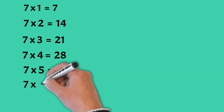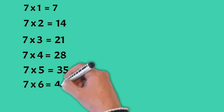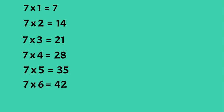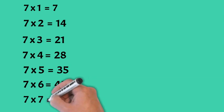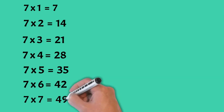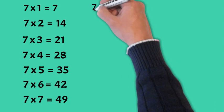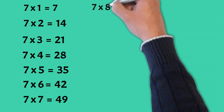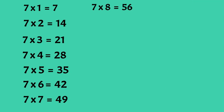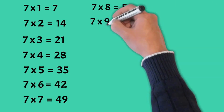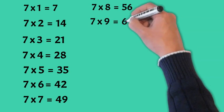7 x 6 is 42. 7 x 7 is 49. 7 x 8 is 56. 7 x 9 is 63.